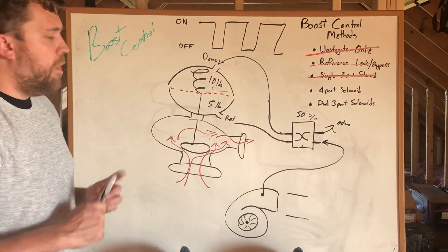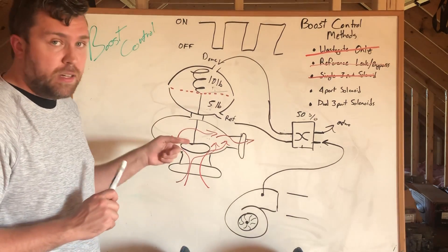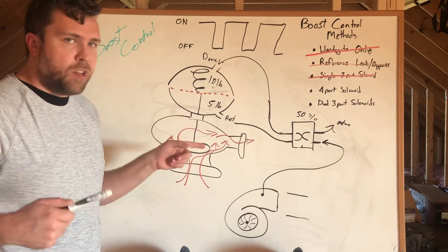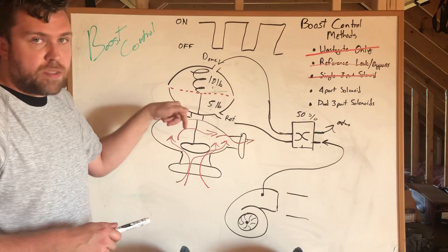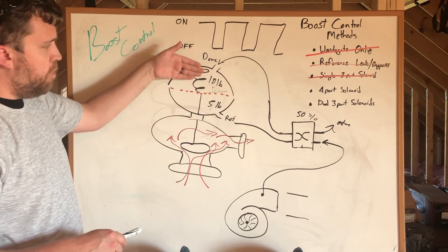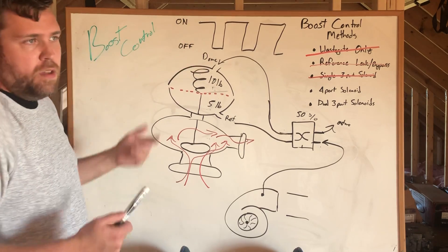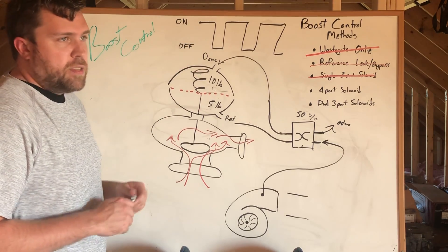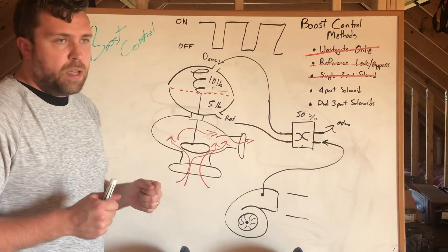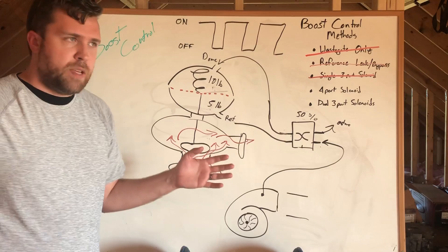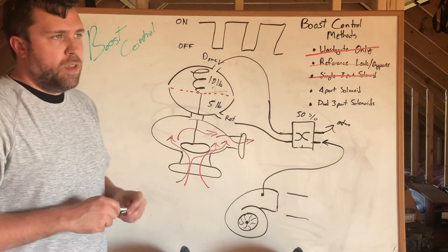That said, when you're trying to pin the wastegate shut, you're intentionally—as long as this functions correctly—trying to hold this thing closed. You're adding force to the top of the dome, helping the spring hold it down. So it's the quickest way that you can do a little bit of plumbing and be able to get huge boost swings.